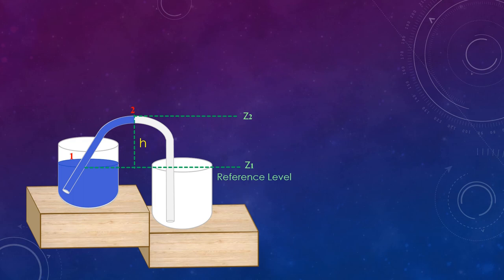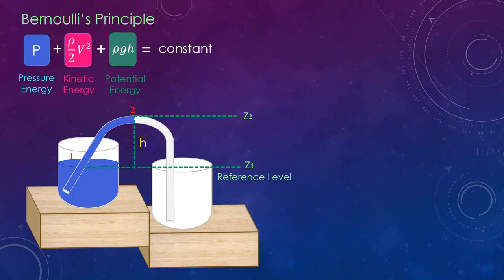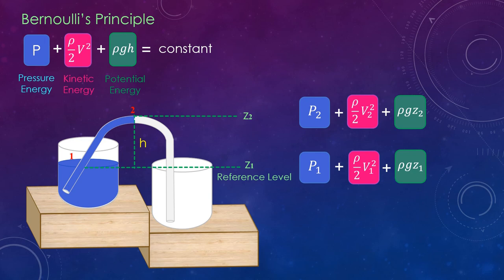So now we can write Bernoulli's equation at point 1 and 2 as shown here. Point 1 is at atmospheric pressure, so we can replace the pressure energy term with P_atm. But for point 2, it is at a vacuum or low pressure, so pressure at point 2 can be set to zero. Velocity of the fluid at point 1 and 2 both are taken to be zero. At point 2, the velocity is zero because the fluid will stop flowing when the maximum height is reached. Since z1 is at reference level, z1 becomes zero, and z2 is replaced by h.